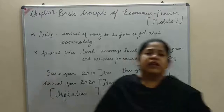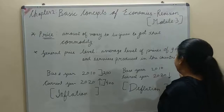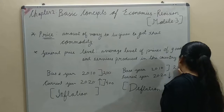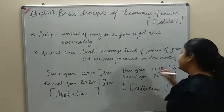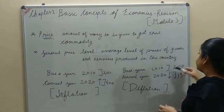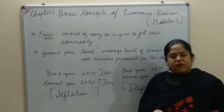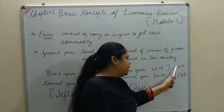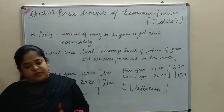In the same manner, if we take base year 2010 with a price level of 200, and in the current year 2020 the average price level has become 150, there is a decrease in the general price level. When we compare the base year and current year and find a decrease — 200 to 150 — we term it as deflation. So inflation is the increase in general price level and deflation is the decrease.